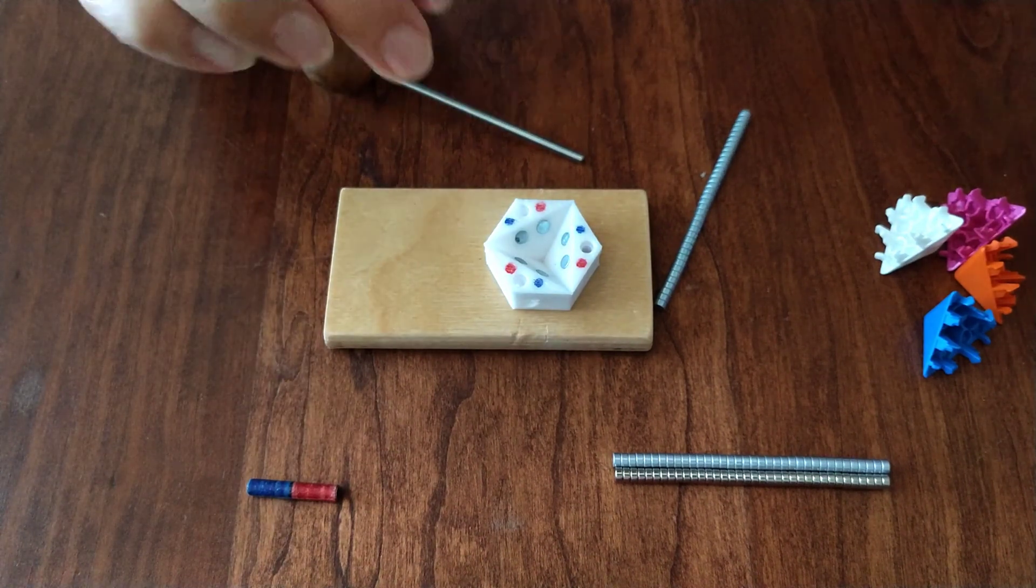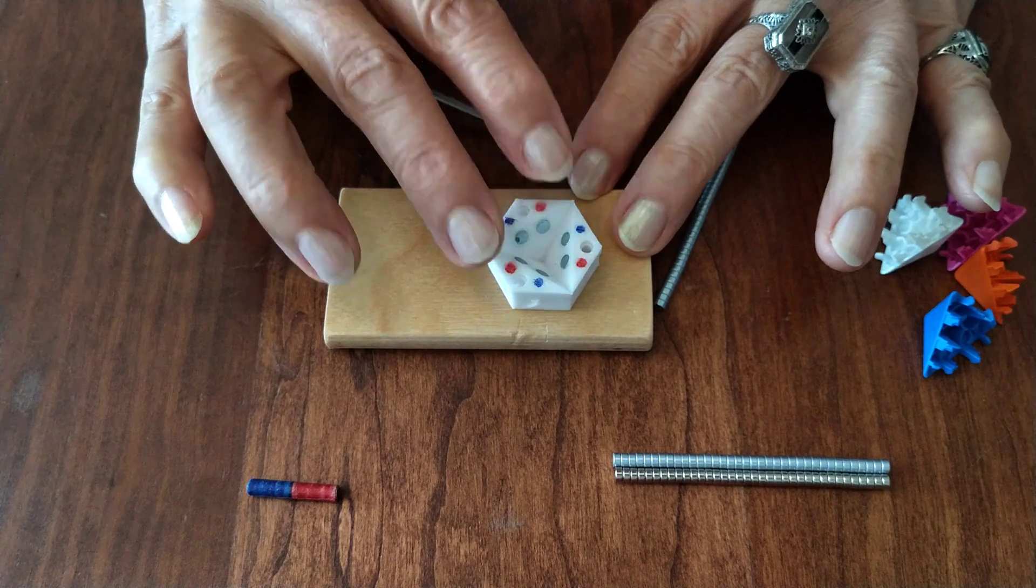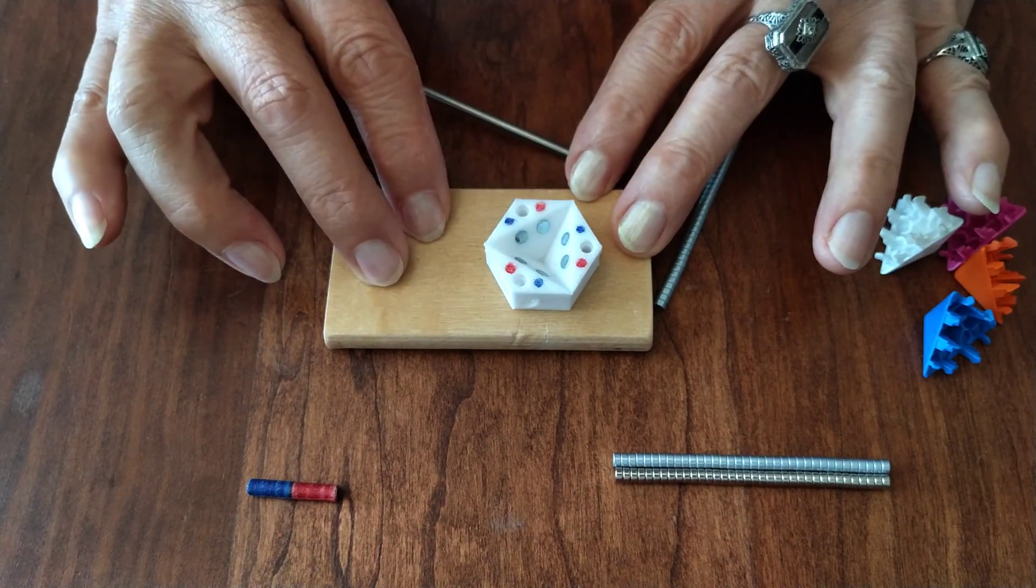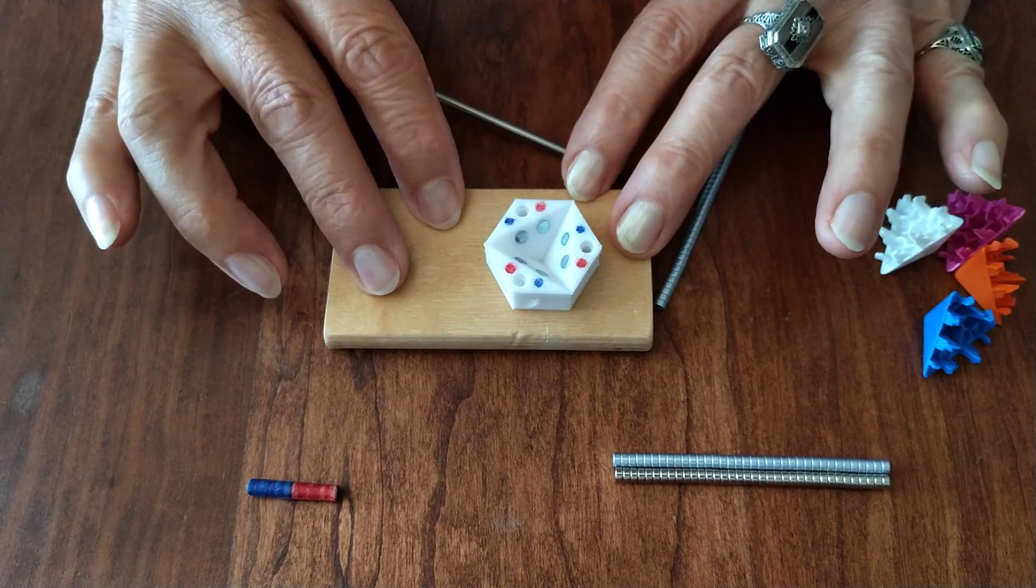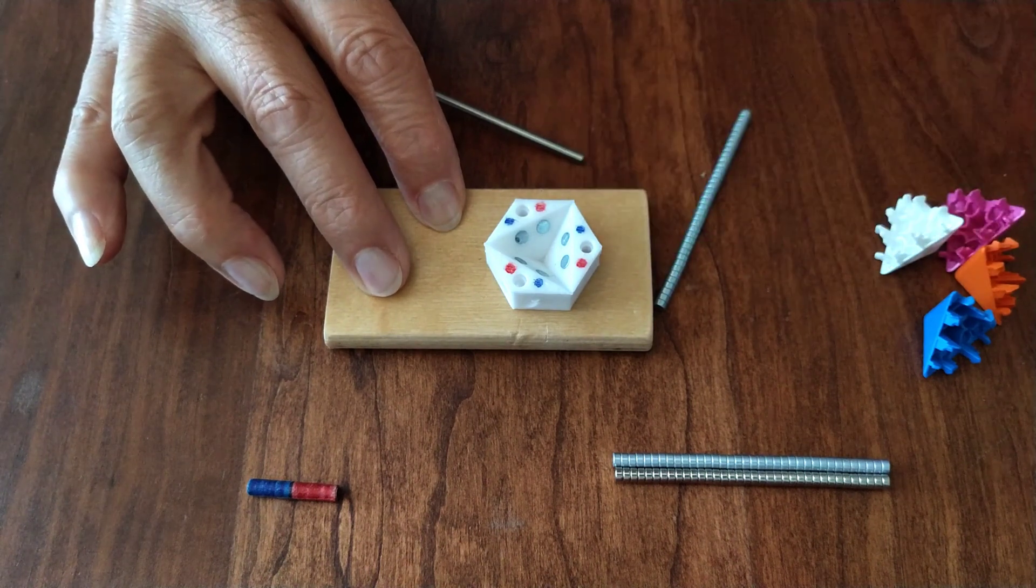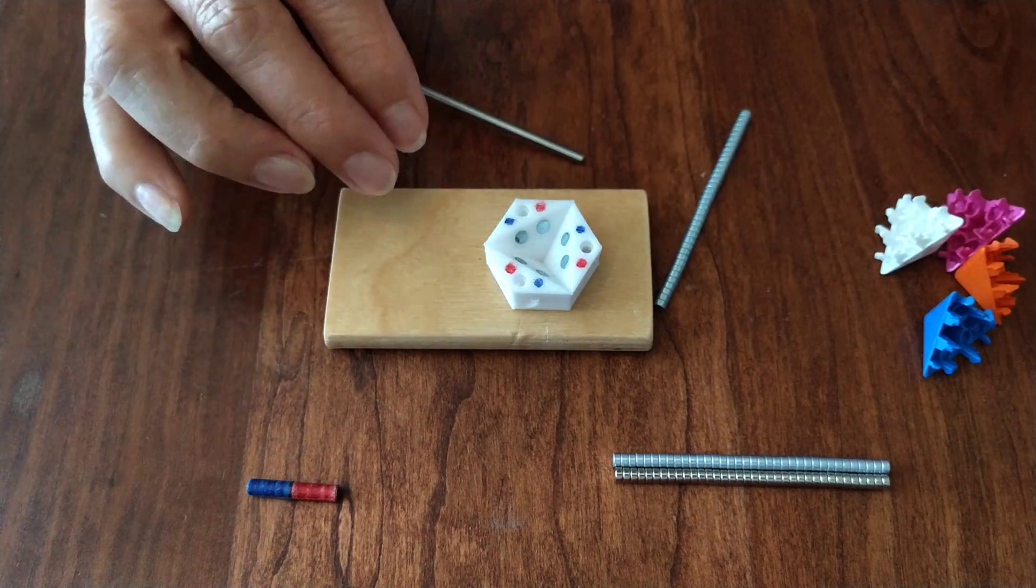Now the first thing you're going to want to do is to mount your assembly jig to some sort of base. It can be almost anything. In this case I just used a hunk of wood and some hot glue. You can use just about any kind of glue you have.